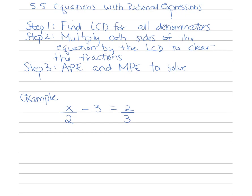When working with equations with rational expressions, we're going to use a similar method as when we were solving equations with numeric fractions — we can eliminate fractions. First, we need to find the LCD for all the denominators. Then we multiply both sides of the equation by the LCD to clear the fractional portion, and solve using the addition and multiplication properties of equality.